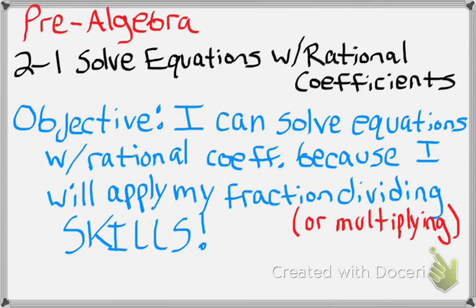Or, one way of explaining it, you're multiplying fraction skills. But we'll talk about this two ways of explaining it. So, solving equations with rational coefficients — as a note, rational coefficients are just fractions. We're saying we have a fraction coefficient. Rational is a fancy word for fraction. Remember that.